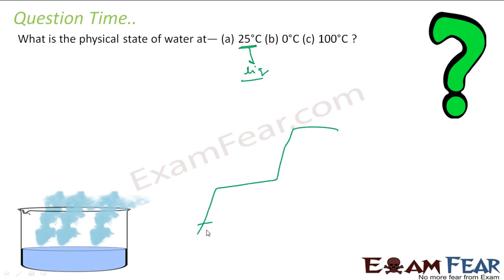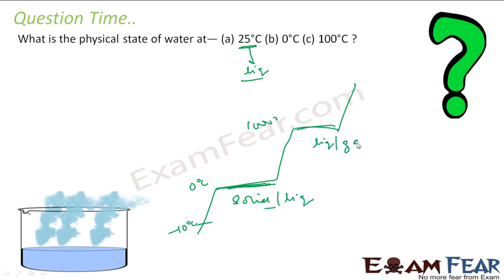On the graph, let's say we have minus 10°C, 0°C, 100°C, and beyond. At 0°C, water is in a dual state — both solid and liquid exist simultaneously. At 100°C, it is in both the liquid state and the gas state. At 25°C, somewhere in between, it is in the liquid state.